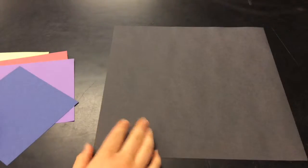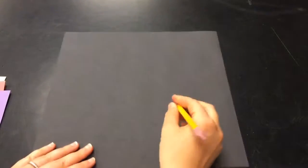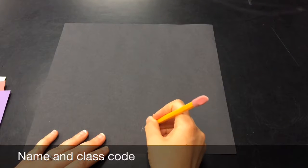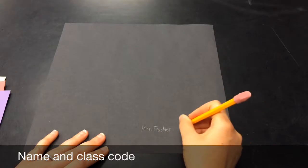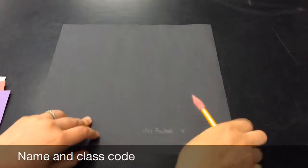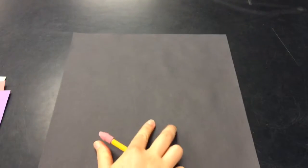So the first thing that you are going to do is you're going to get a black square piece of paper and you're going to want to write your name and class code on the back. You can use regular pencil, it will show up. Then flip it over.